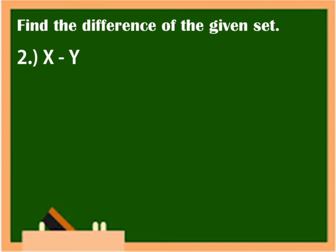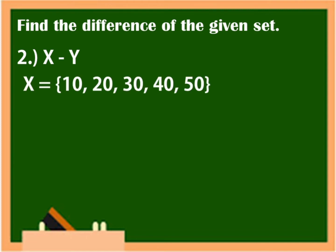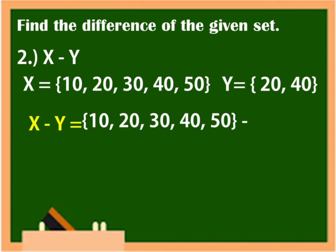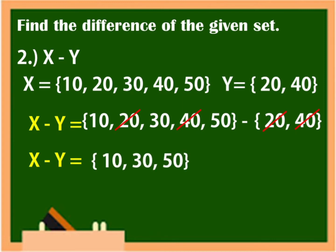Another example: find the difference between X and Y if X is equal to {10, 20, 30, 40, 50} and Y is equal to {20, 40}. Now, first you are going to remove all the elements that can be found in X that also belong to Y. So, what are those elements? 20 and 40. What are the remaining elements in set X? That is 10, 30, and 50. Therefore, X minus Y is equal to {10, 30, 50}.